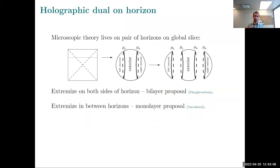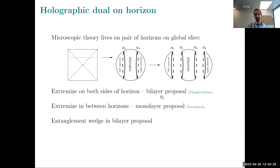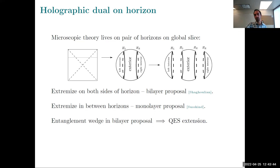I'm going to do some examples with these proposals. These examples are classical, so I'm just extremizing the area, not the full generalized entropy. In support of the bilayer proposal: if you find extremal surfaces on both sides of the horizons, you have a natural notion of an entanglement wedge — a closed surface with an interior — and there's an obvious quantum extremal surface extension where you add in the matter entropy contained within the entanglement wedge. If extremal surfaces only live to one side of the horizon, you can't really define a closed region, so it's not clear what the quantum extension would be.